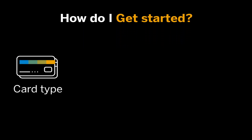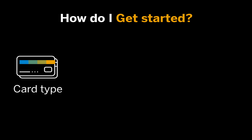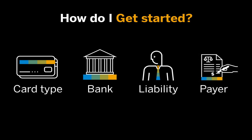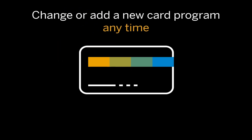When getting started with a corporate credit card feed, we'll need to know some information about your program: what type of card you're using, who your issuing bank is, who receives the credit card statement, and who pays the statement. If you suspect you may add or change a card program later, that's no problem. It is very common for growing businesses to do this, and SAP Concur routinely accommodates.